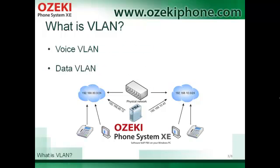It is possible that computers and VoIP phones are connecting to the same physical device, but even so they are in different networks. It means that they are in different VLANs — that can be, for example, a Voice VLAN and a Data VLAN.